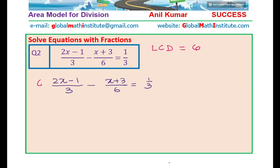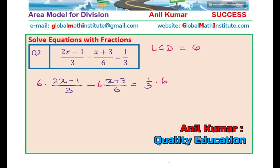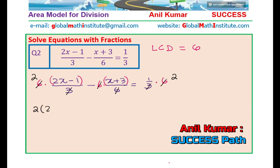When we multiply each term by 6, it is important to place brackets. 6 will go twice with 3, and the 6 in the denominator cancels. So we get 2 times (2x minus 1) minus (x plus 3) equals 2. Now open the brackets, applying the distributive property: 4x minus 2 minus x minus 3 equals 2. Note that the negative sign changes both signs inside the bracket.